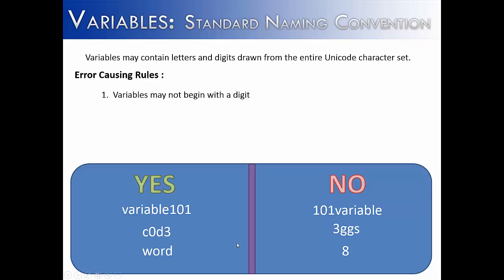Word is just a set of characters without any numbers inside of it, which is completely legitimate. On the other hand, 101variable is bad because it starts with a number 101. Eggs starting with 3 right here is invalid, and you can't have a variable that is solely digits. You can do it with alpha characters, but not with digits.